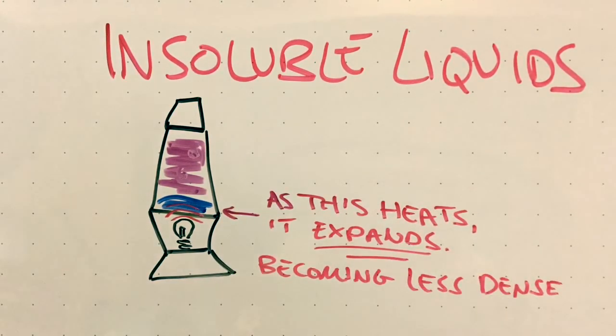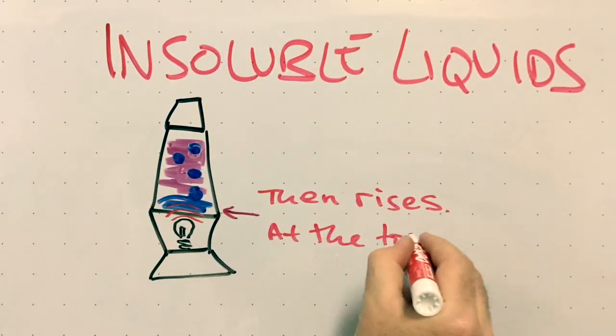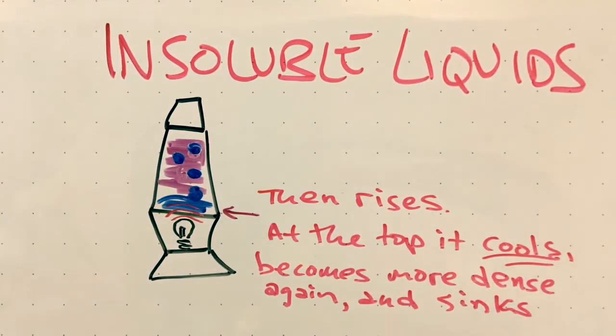Because the two liquids have very similar densities, the heated bottom liquid begins to flow up through the other liquid to the top of the lamp. As it gets to the top, it cools, becomes more dense, and sinks back to the bottom.